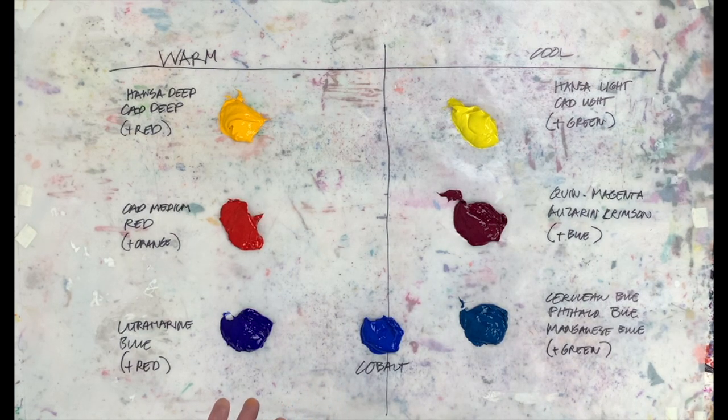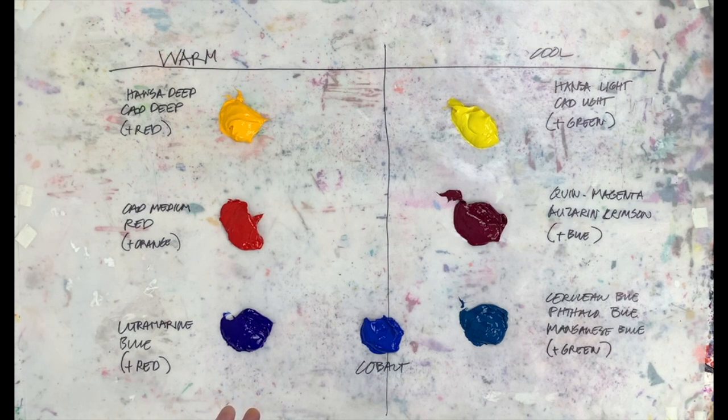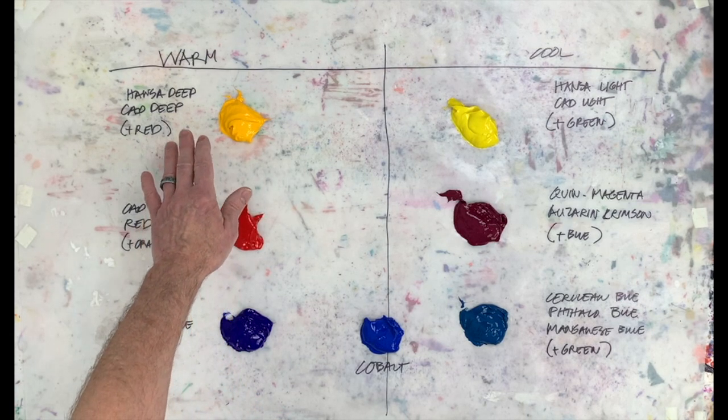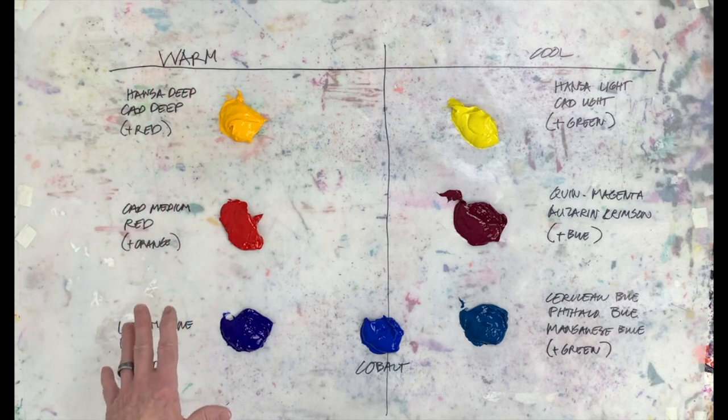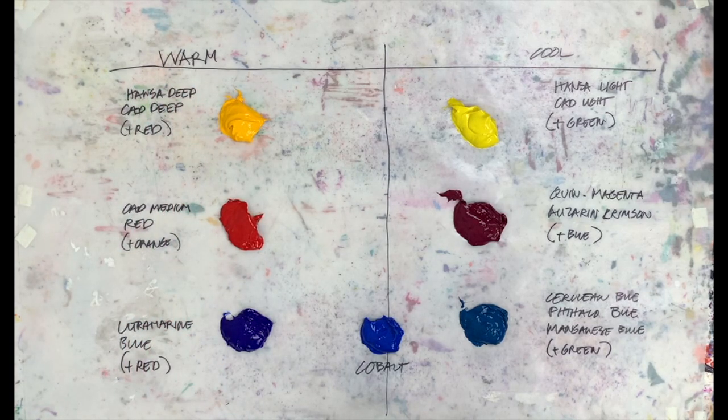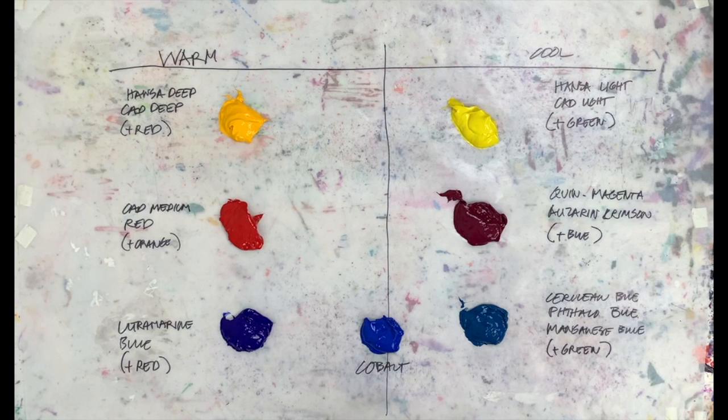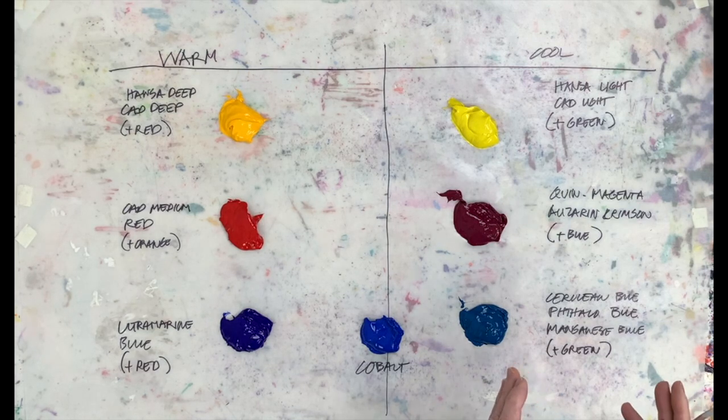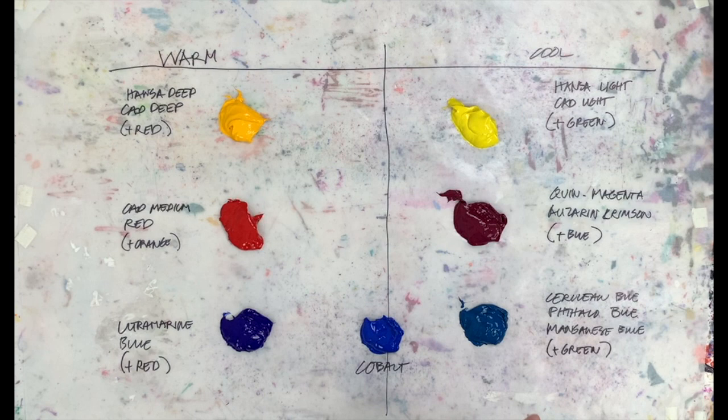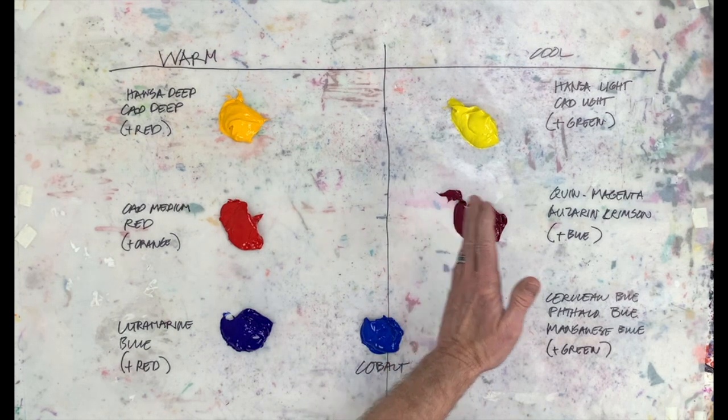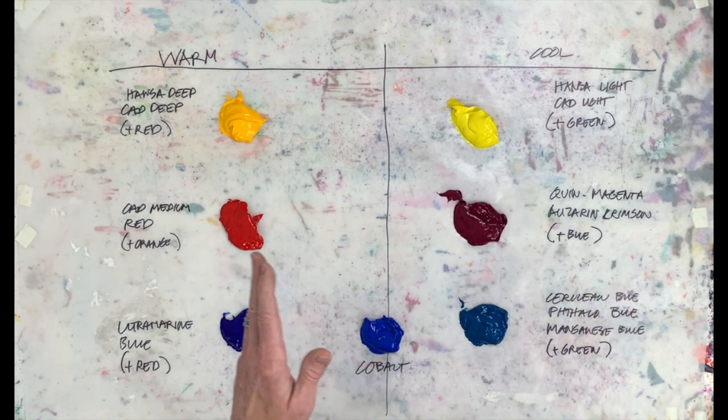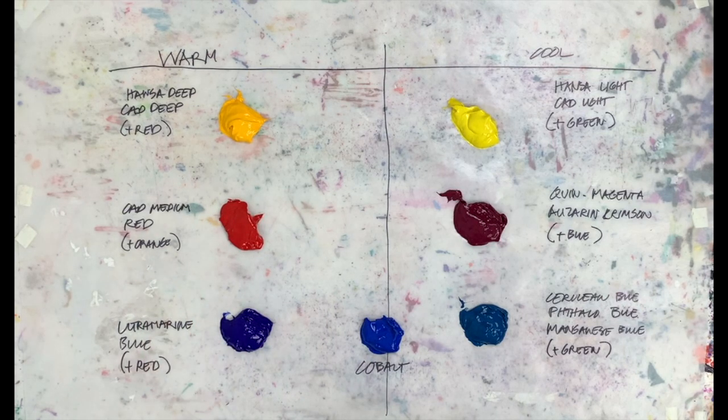Typically, I'll use Mars black and titanium white. Now, if we look at warm colors, typically they're going to be warmer because they have the addition of either yellow, orange, or red. A cool color is going to be cooler because it has the addition of green or blue to it. The addition of green or blue makes it cooler. The addition of yellow, red, or orange makes it warmer. So with a little practice, anybody can see the difference in these.